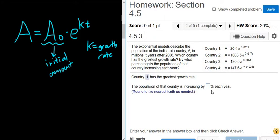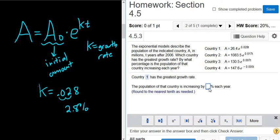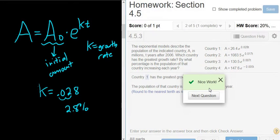The population of that country is increasing by blank percent each year. So it's 0.028, that's the k for our country 1. So in percentage form, you would move it over two places. So it'd be 2.8%. So I'm pretty sure that's what they want there. Let's try it. 2.8. Good stuff.